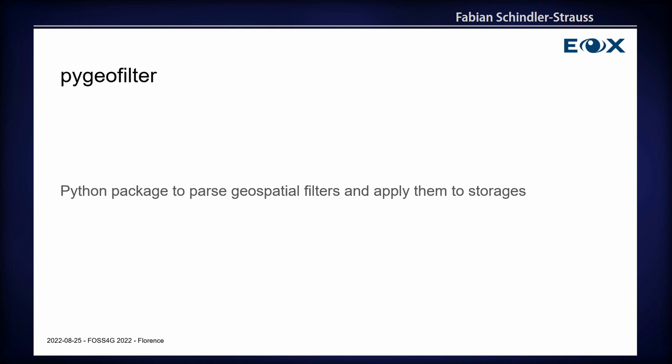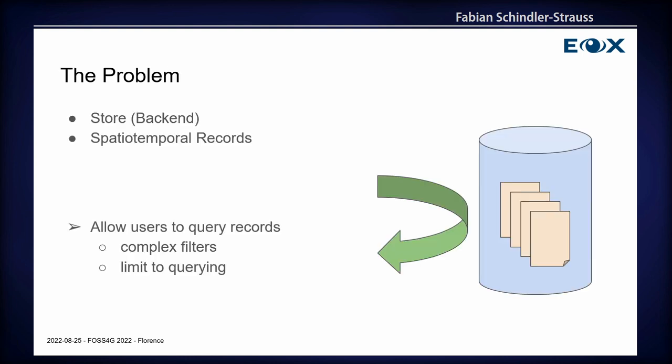This sounds really abstract, so I'm going to start with explaining a little bit more about the actual problem. The actual problem is you have a store of geospatial metadata or data, and you have stored records there, and then you want to use this to perform geospatial queries. Maybe not simple queries with some simple filters, but maybe some more complex filters. And you also don't want to expose your system to the public — maybe you don't want other people to actually change the records on your system without any security. So you just want to limit them to querying.